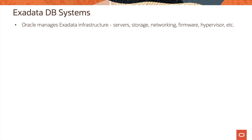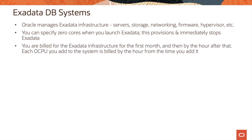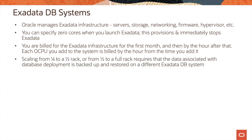Oracle manages Exadata infrastructure — namely the servers, storage, networking, firmware, hypervisor, etc. You can specify zero cores when you launch Exadata, which will provision and immediately stop the Exadata service. You are billed for the Exadata infrastructure for the first month and then by the hour after that. Each OCPU you add to the system is billed by the hour from the time you add it. Scaling from quarter rack to half rack, or from half to full rack, requires that the data associated with the database deployment is backed up and restored on a different Exadata DB system.